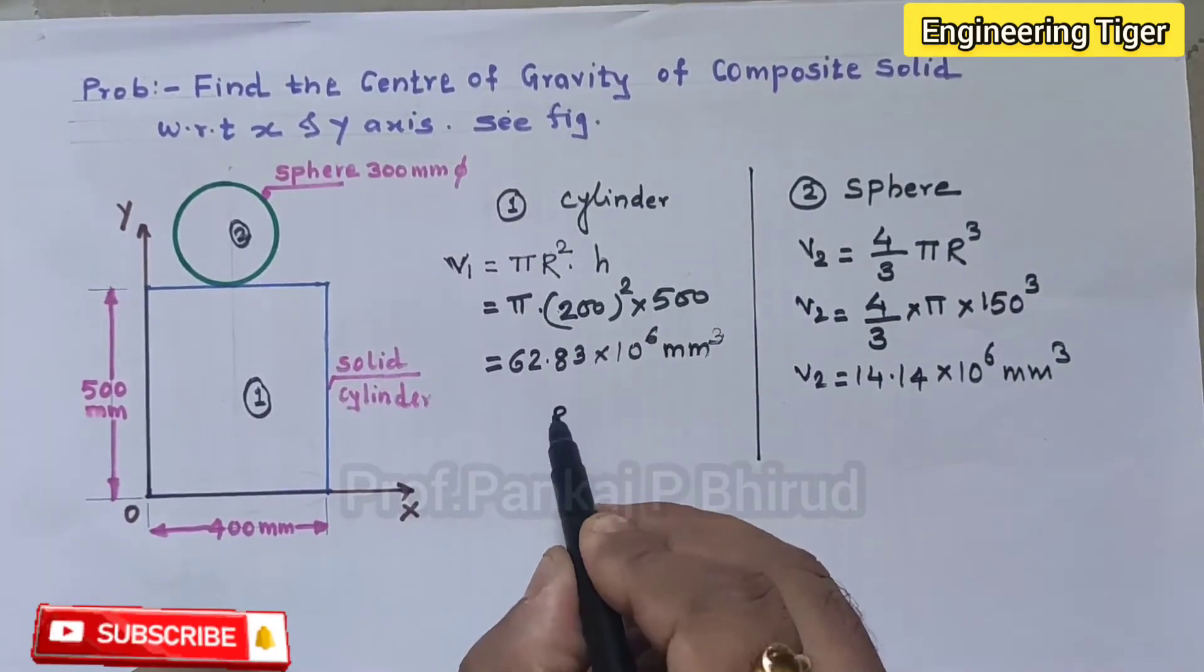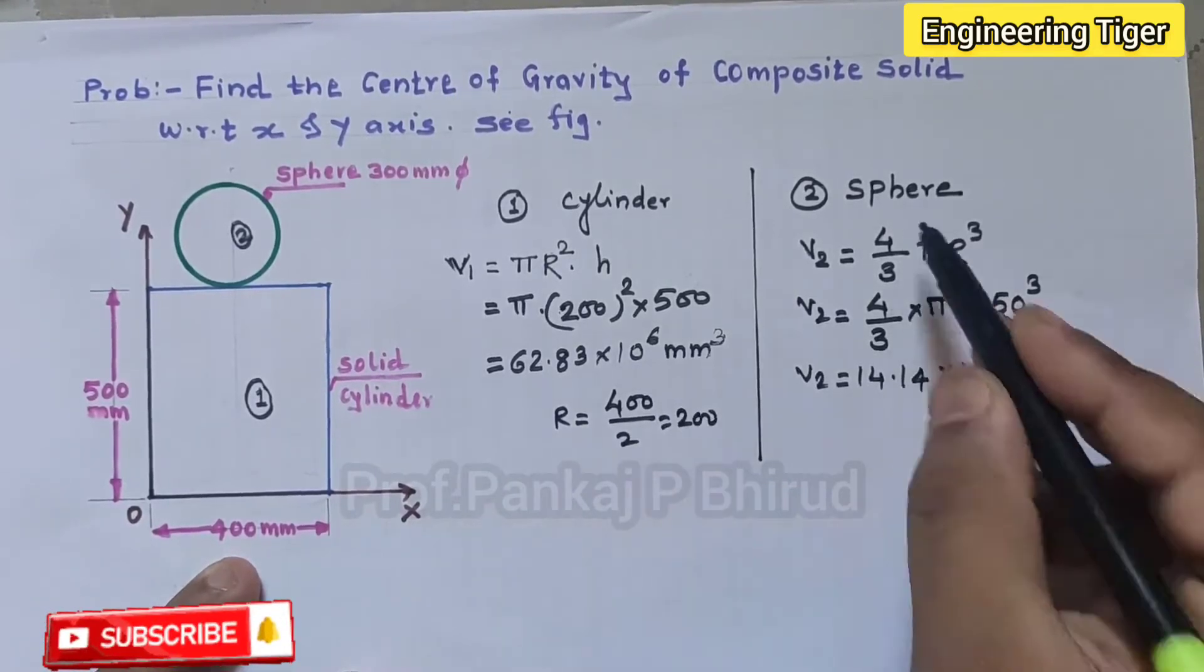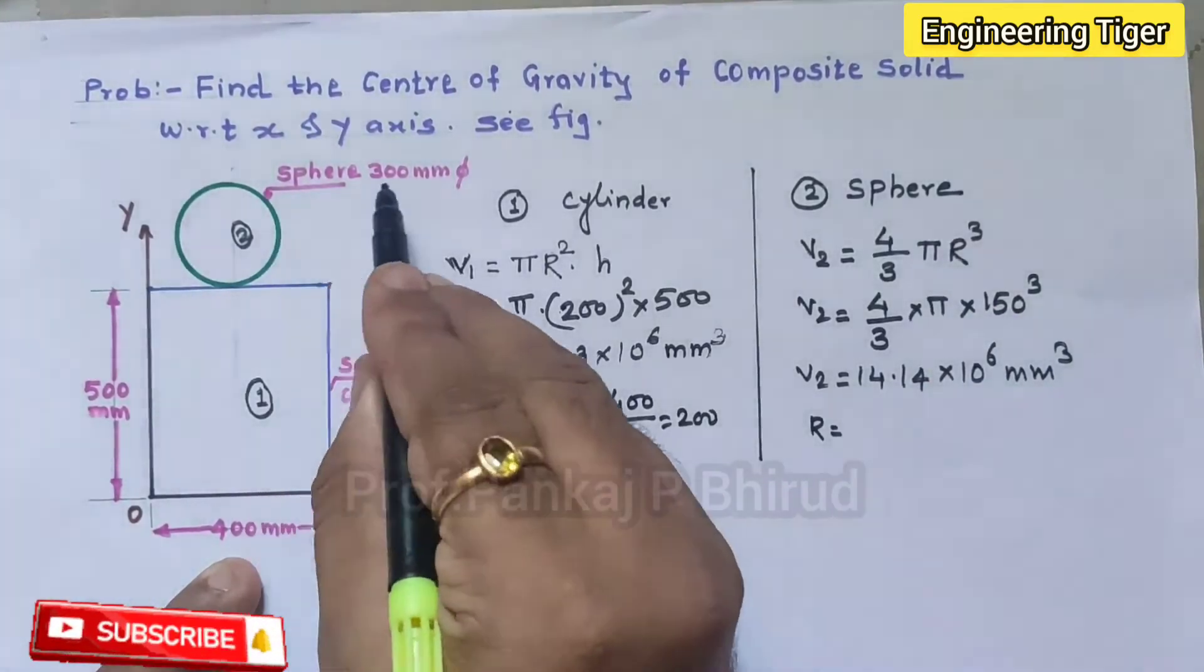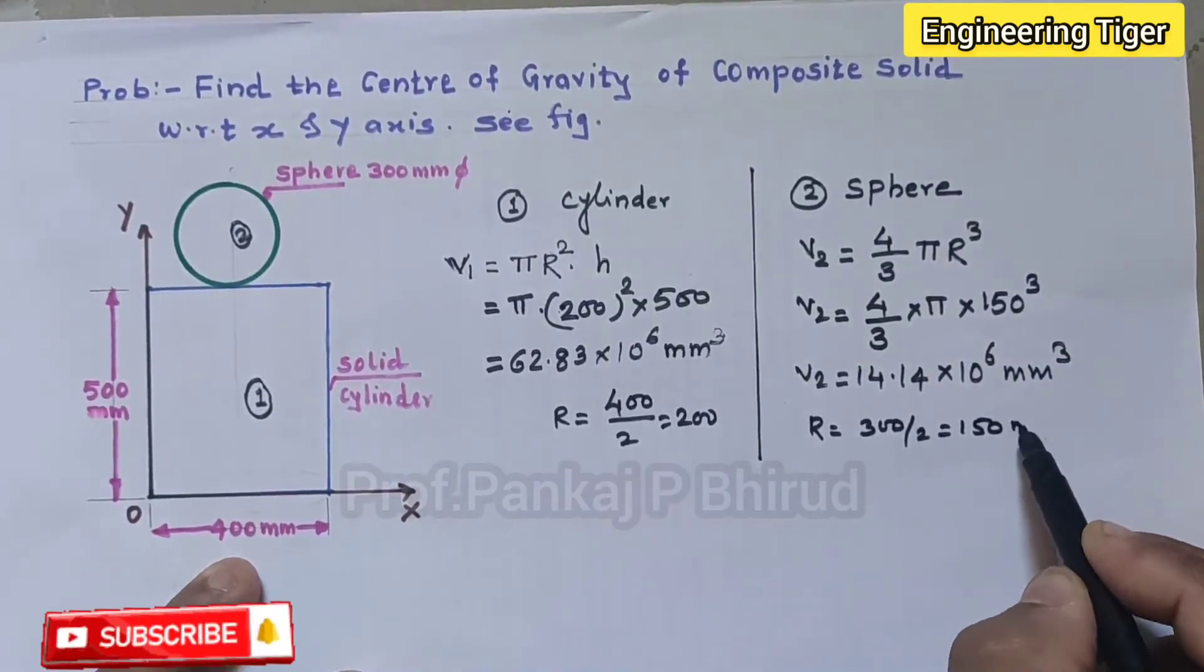For the cylinder r is 400 by 2 that is 200, and for the sphere r is 300 by 2 that is 150 mm.